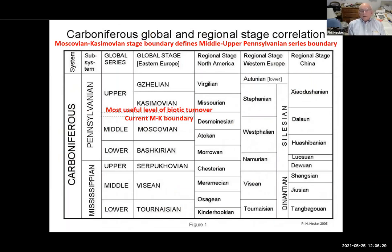What I conclude from all this is that the current Muscovian boundary is the same as before, but the most useful level of biotic turnover is the Desmoinesian-Missourian boundary, extended to the left as a dashed line.